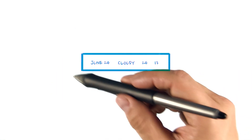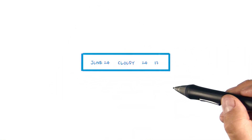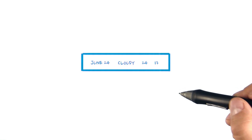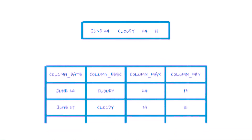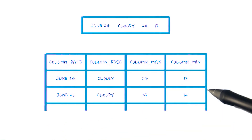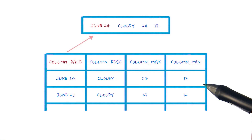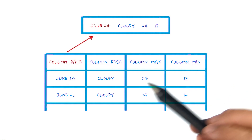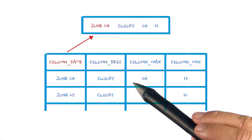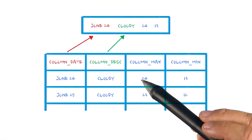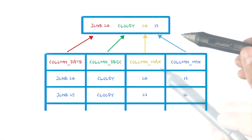So if this represents the user interface, then the bottom table represents the data source that is being used to feed data to the UI. Each column in the data source represents a UI element.